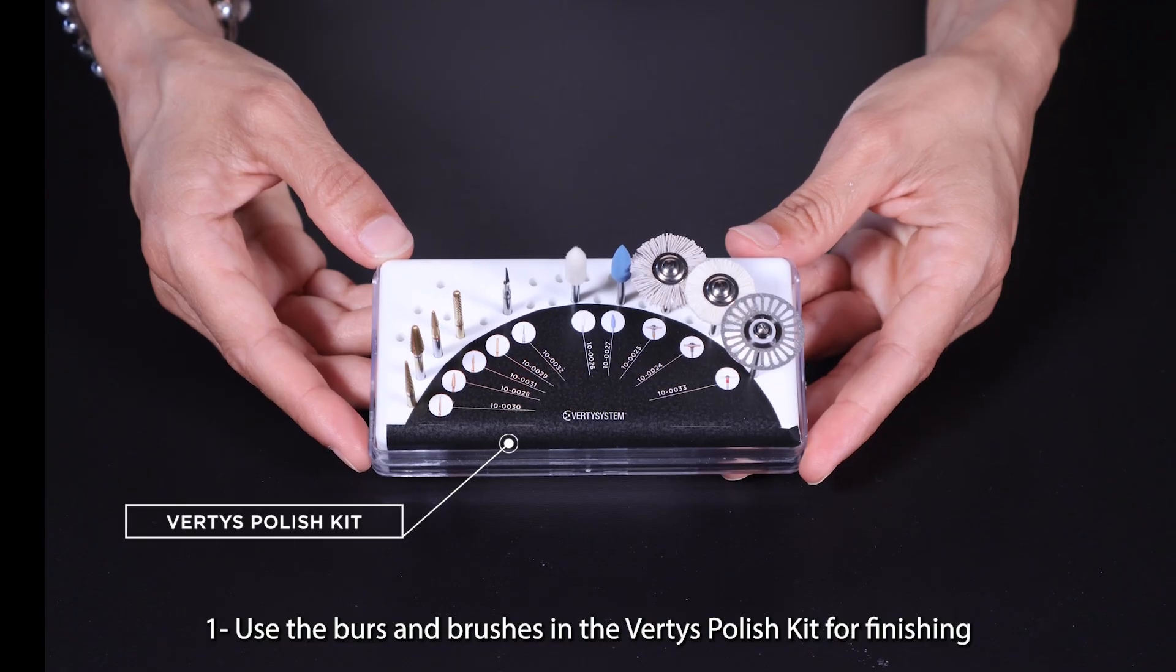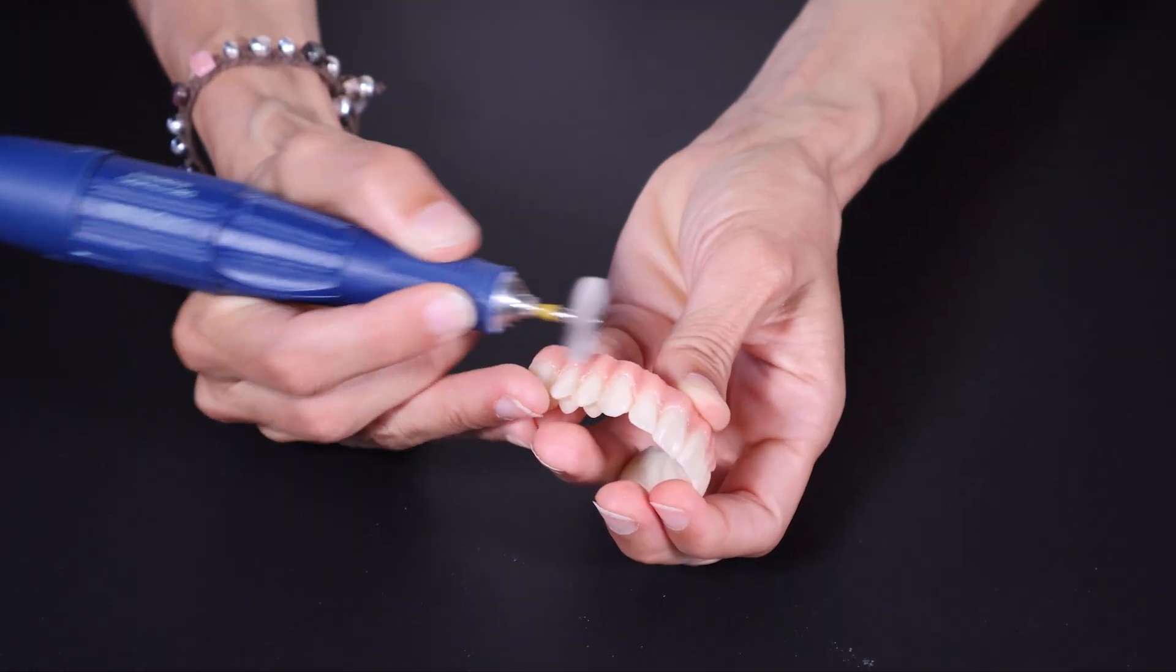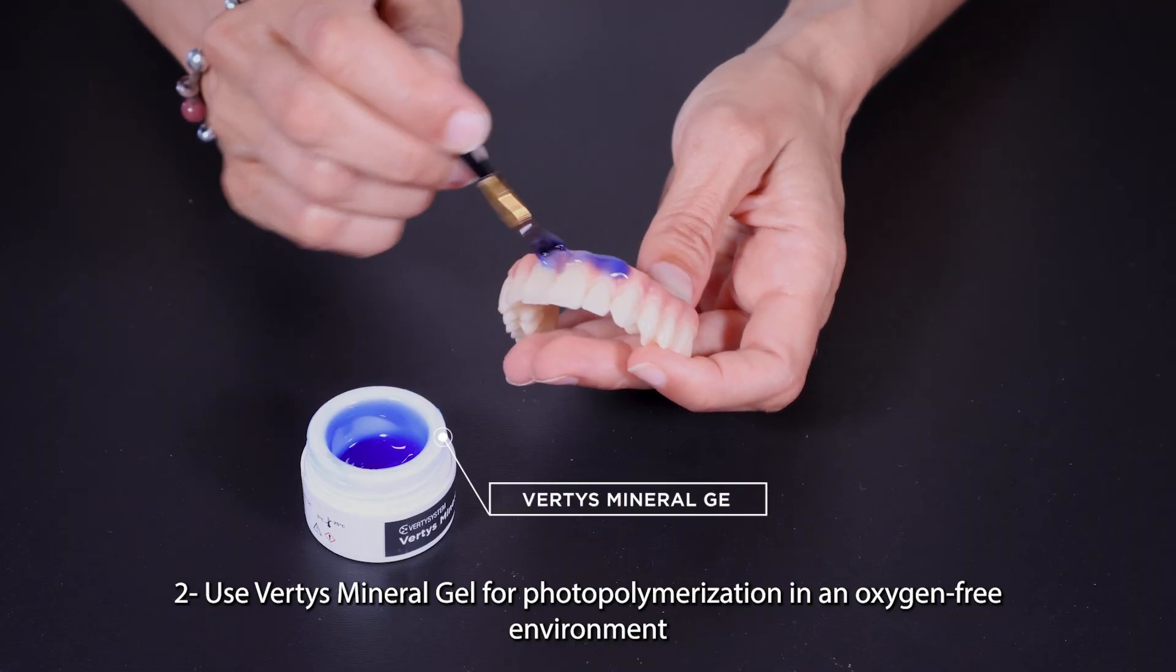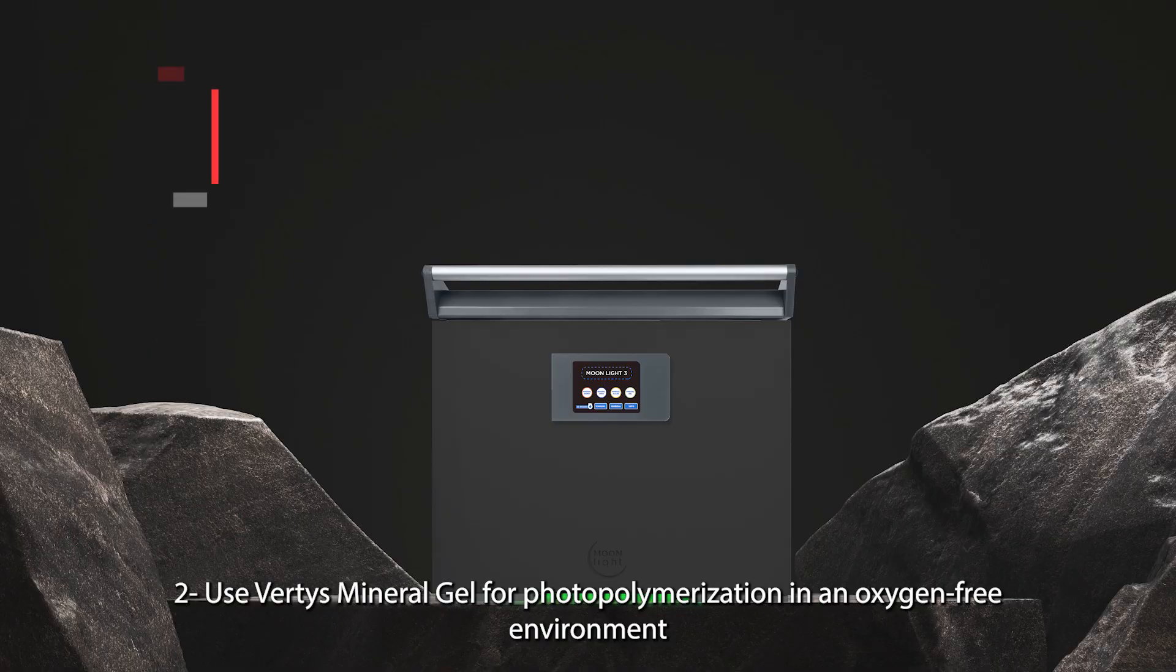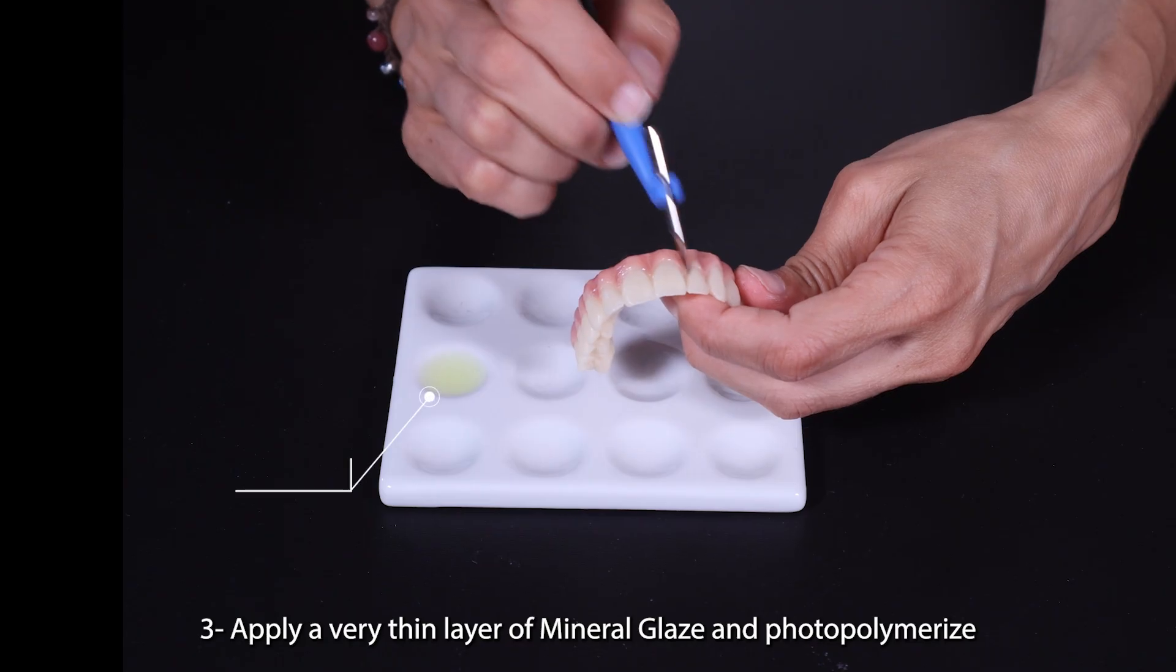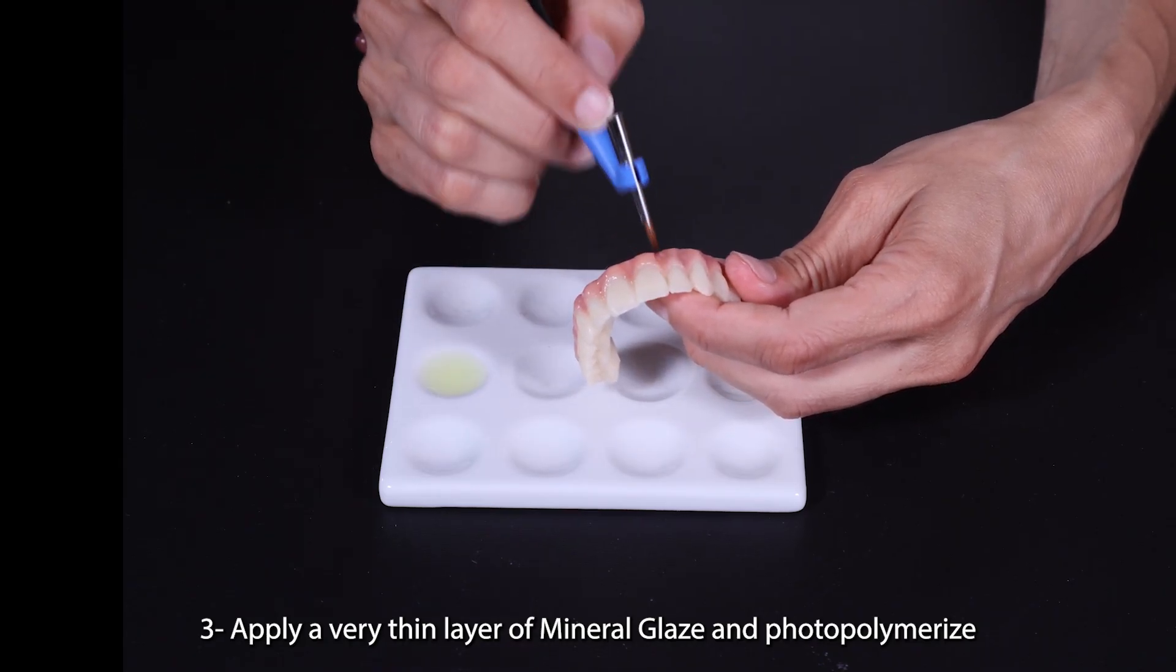The final steps are in the following order: One, use the burs and brushes in the Vertis Polish Kit for finishing. Two, use Vertis Mineral Gel for photopolymerization in an oxygen-free environment. Three, apply a very thin layer of Mineral Glaze and photopolymerize.